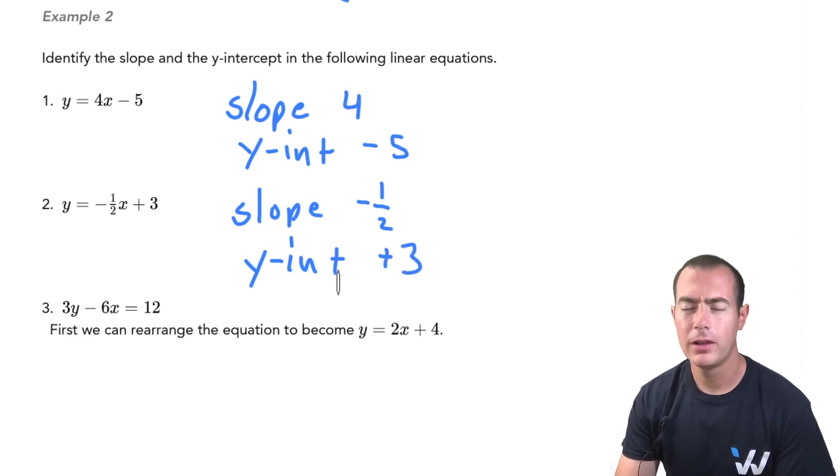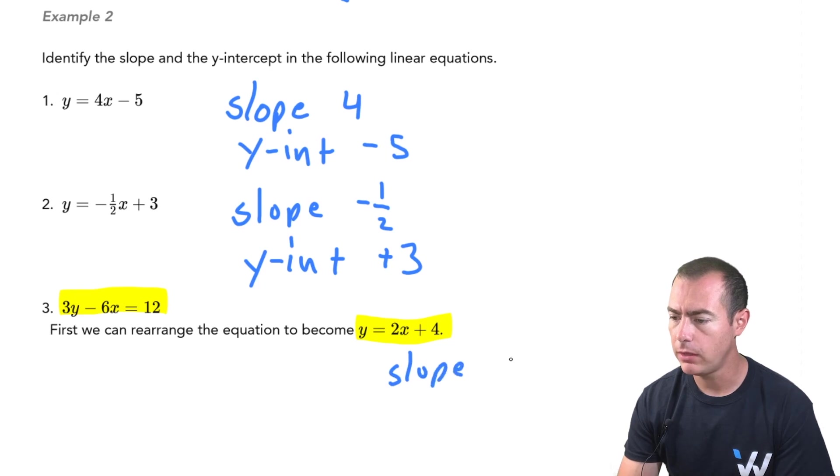Now here's one of those equations where it doesn't look like it's in the proper form, and that's okay. This is definitely one you can manipulate, rearrange, and get it in that proper form. When it's in that proper form, this will be y equals 2x plus 4. Alright, now it's looking great. I can see that the slope is going to be sitting there in front of our x value, so the slope is going to be at 2. And our y-intercept, that's just going to be our positive 4 on the end.